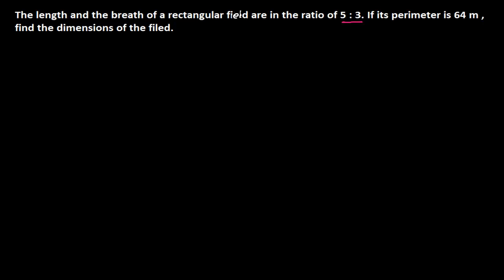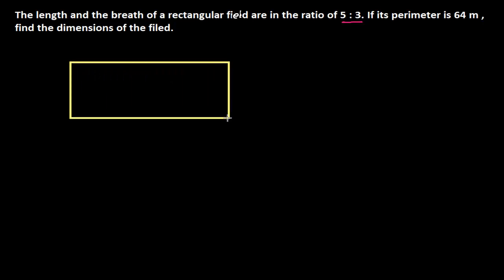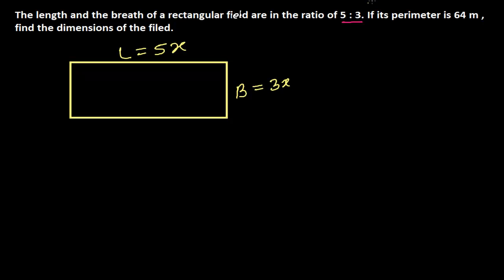Since the question says we have a rectangular field, let me first draw the rectangular field. Suppose this is my rectangular field. The question says the length and the breadth are in the ratio of 5:3, so let me take the length as 5X and the breadth as 3X.